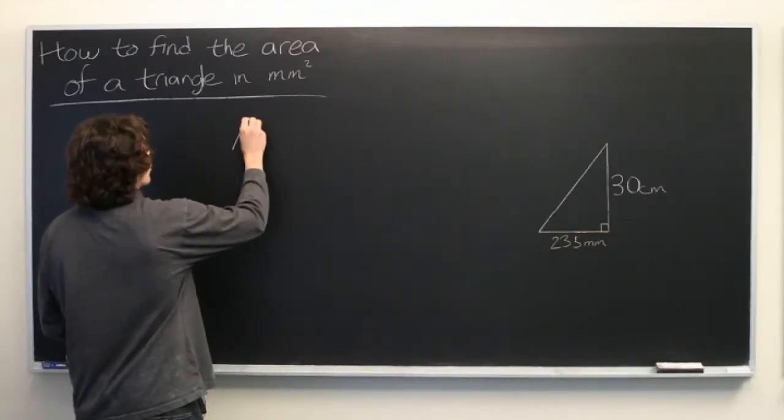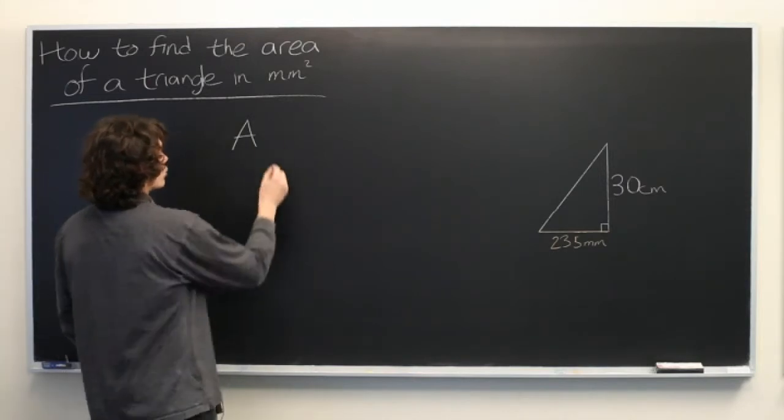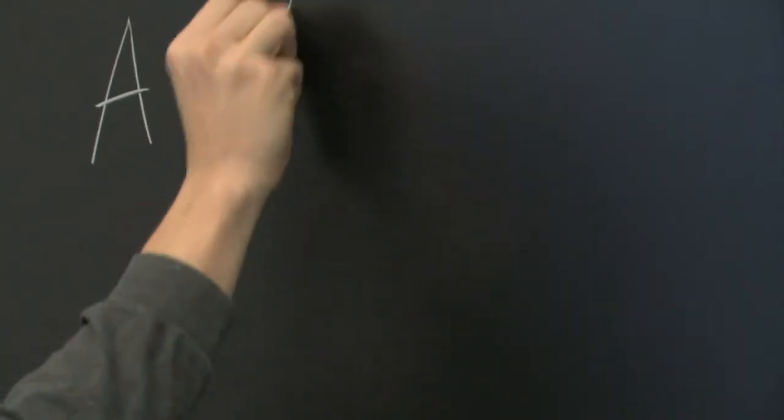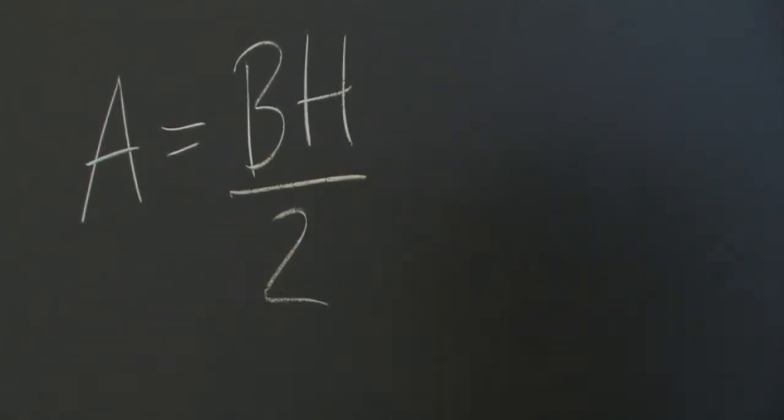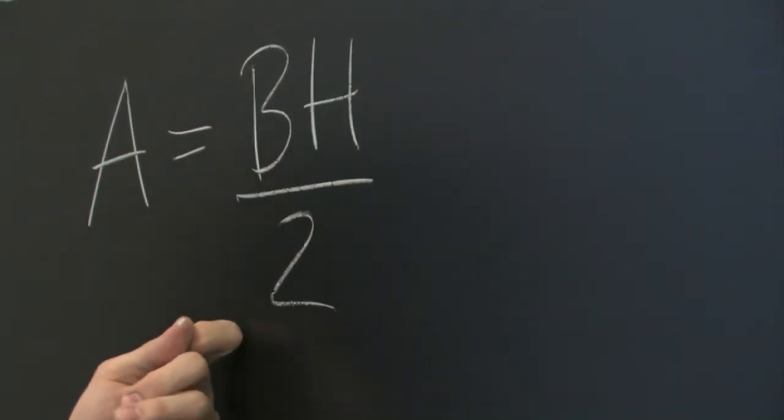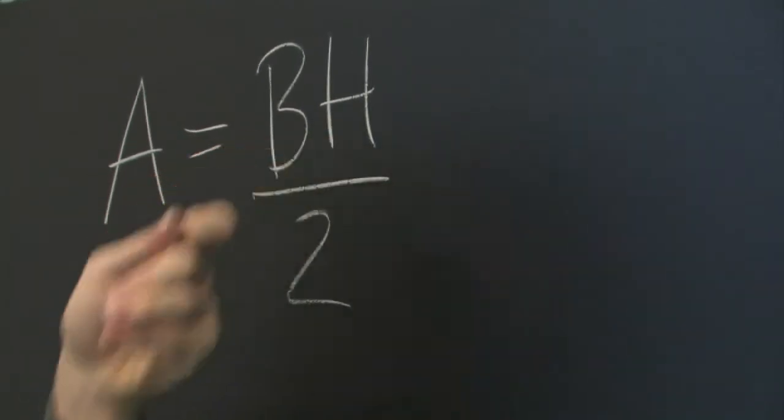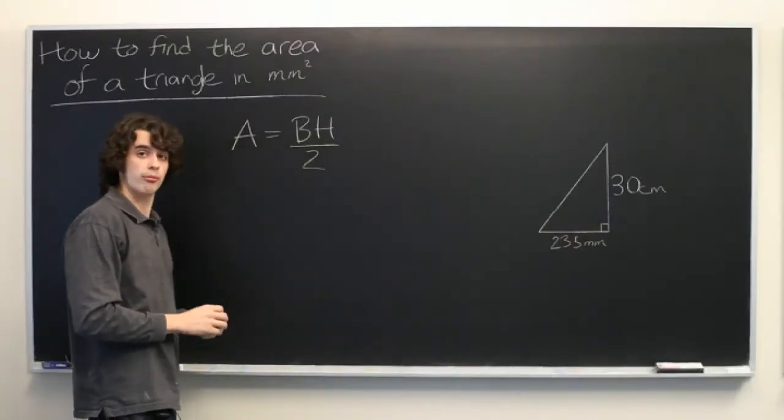Hopefully, you should be able to recall that the area of a triangle is given by base times height divided by 2. But in order for this calculation to make any sense, it is important that the base and height are being measured in the same unit of measurement.